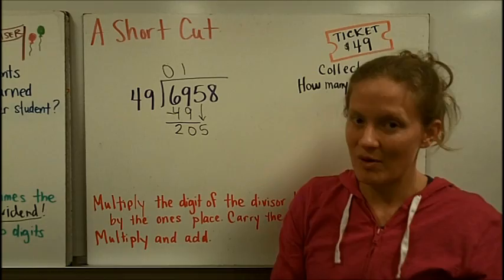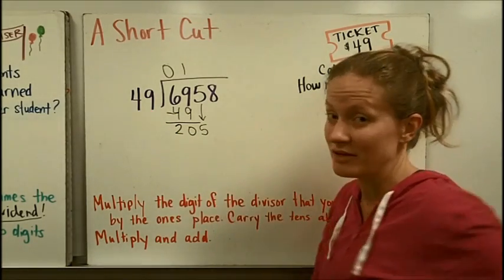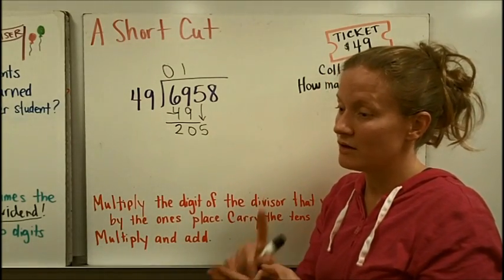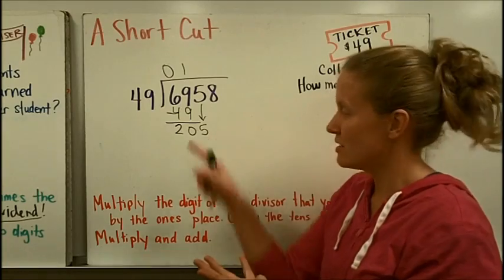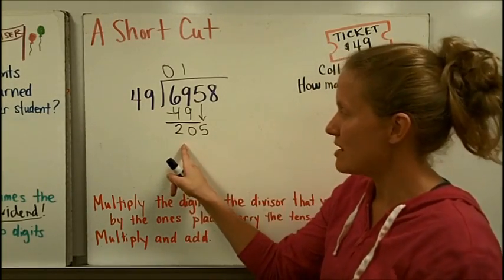Now I need to think about how many times does 49 go into $205. Again, I can think about money. This is $0.50. I could think $0.50, $1, $1.50, $2. That's really close to $205 if you're thinking about money.